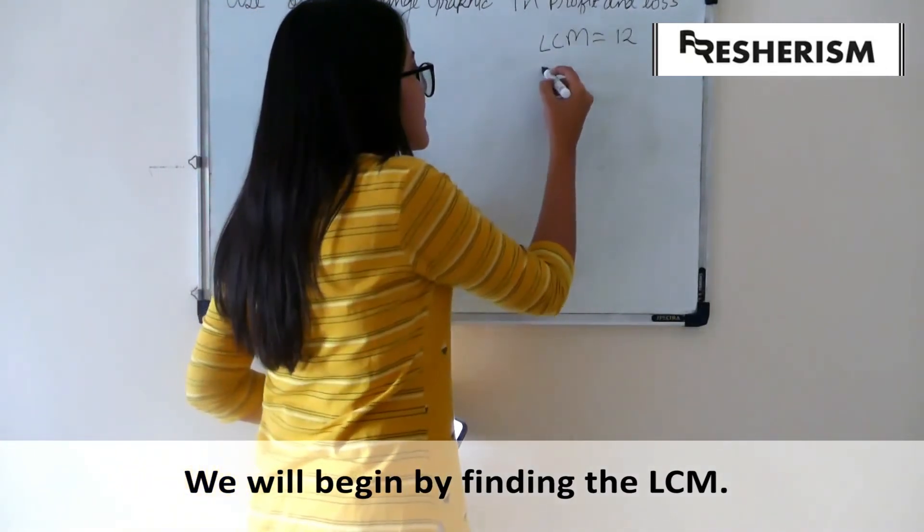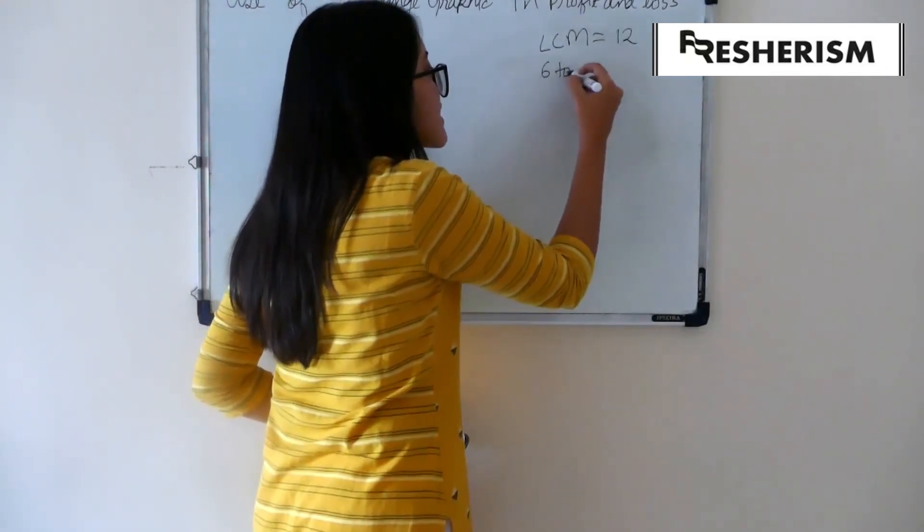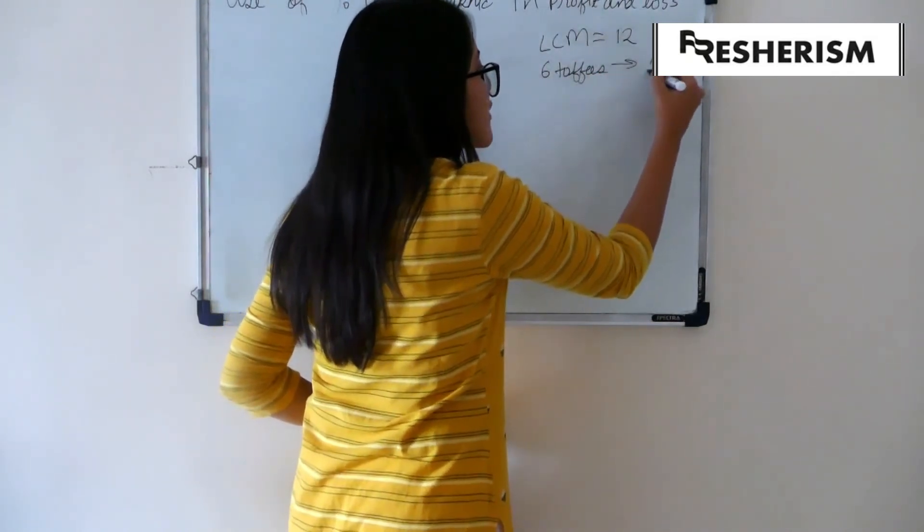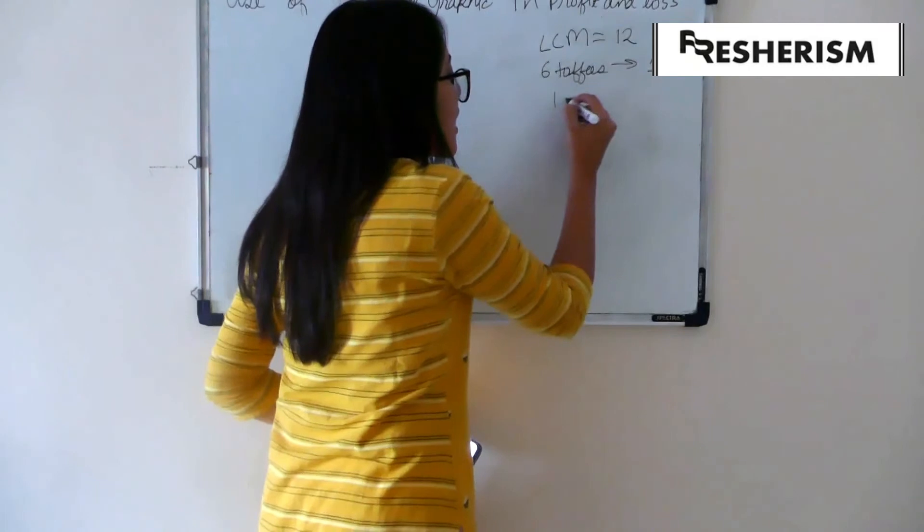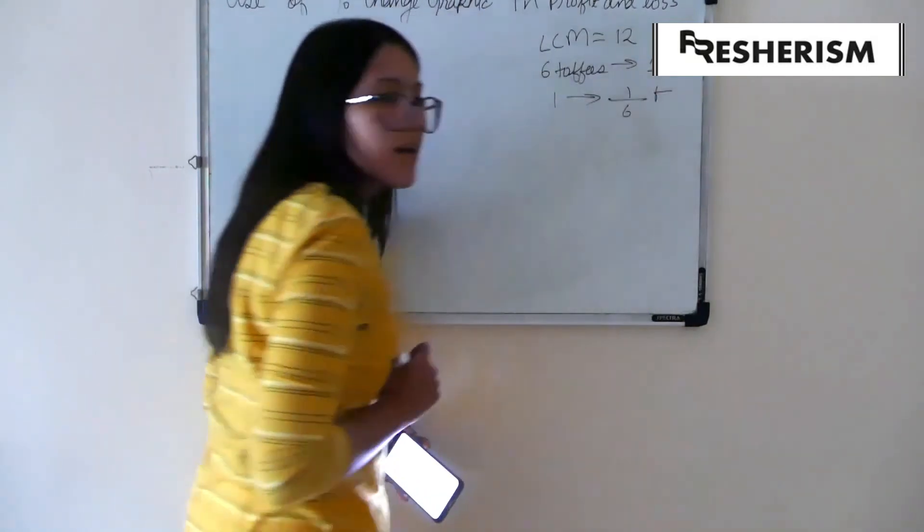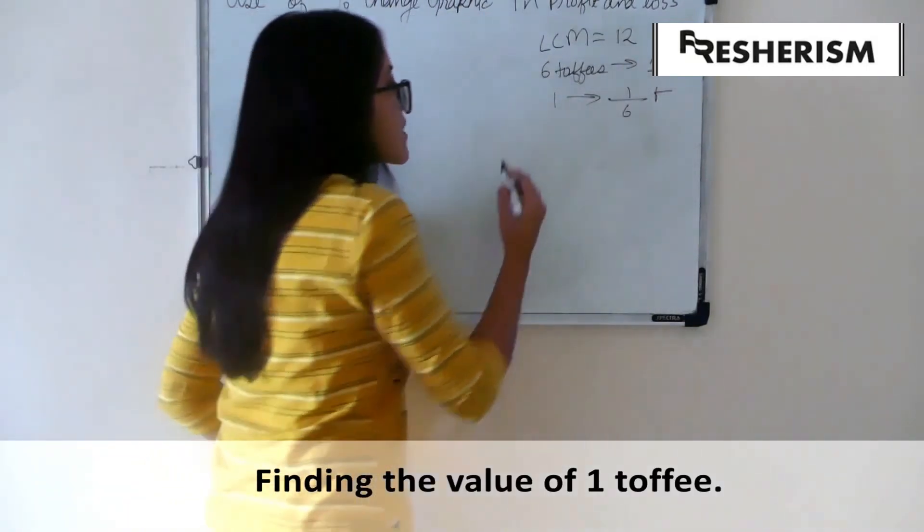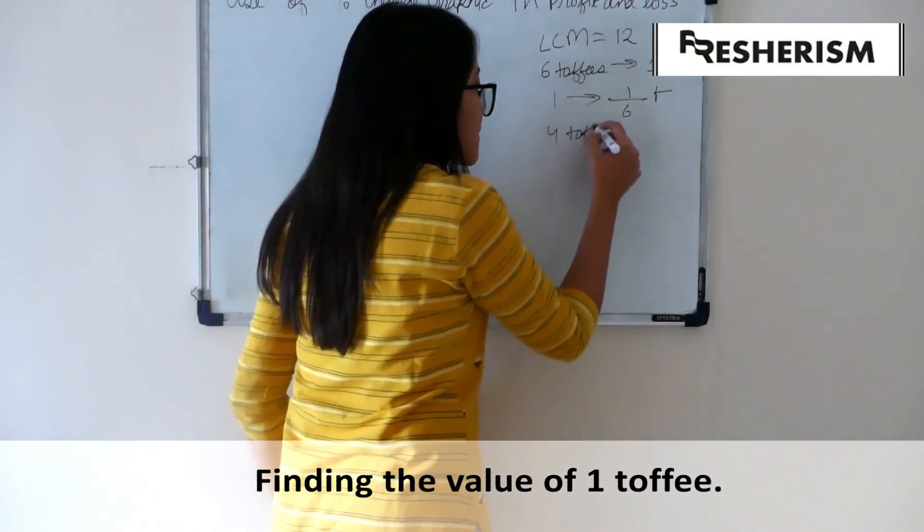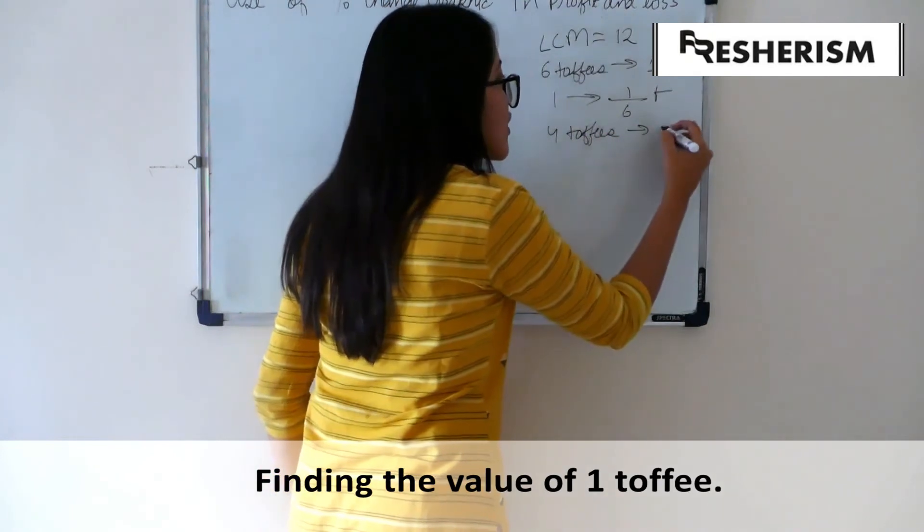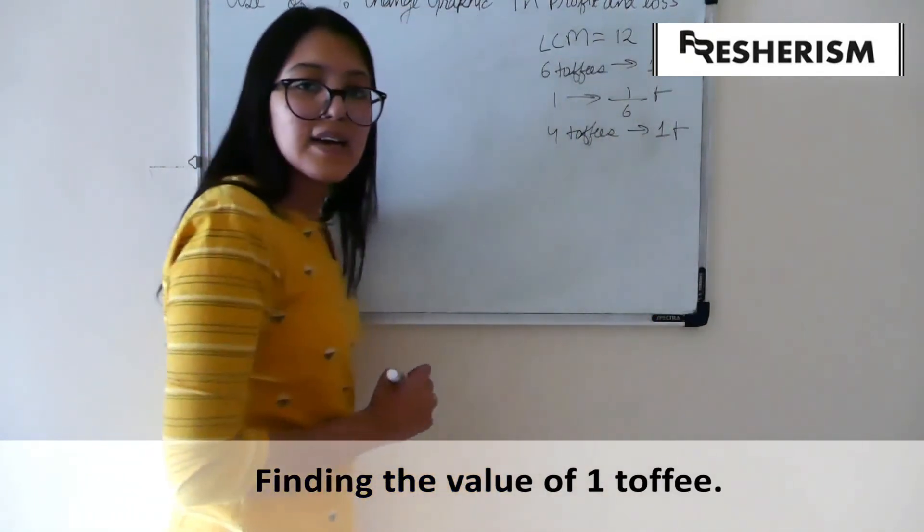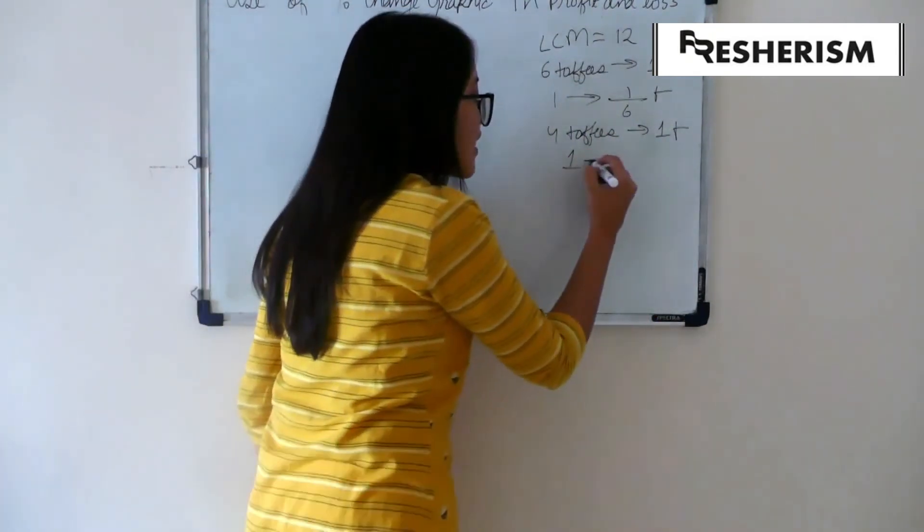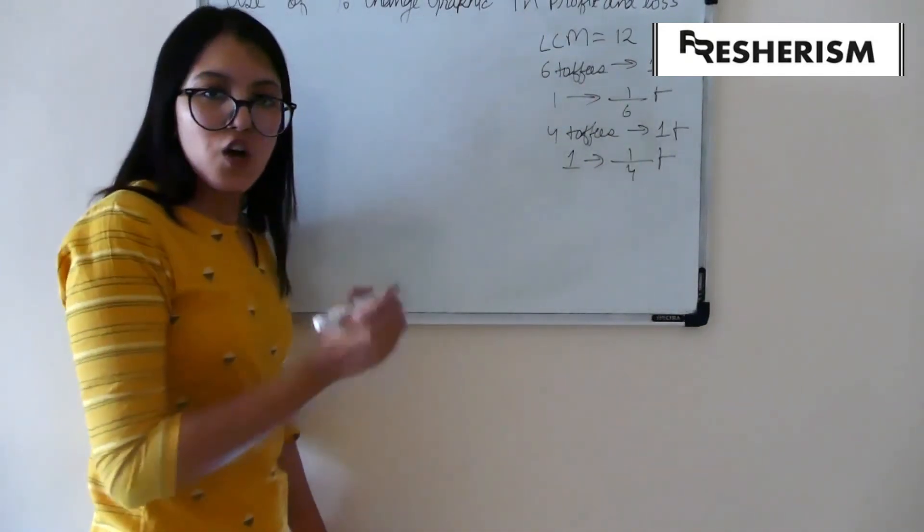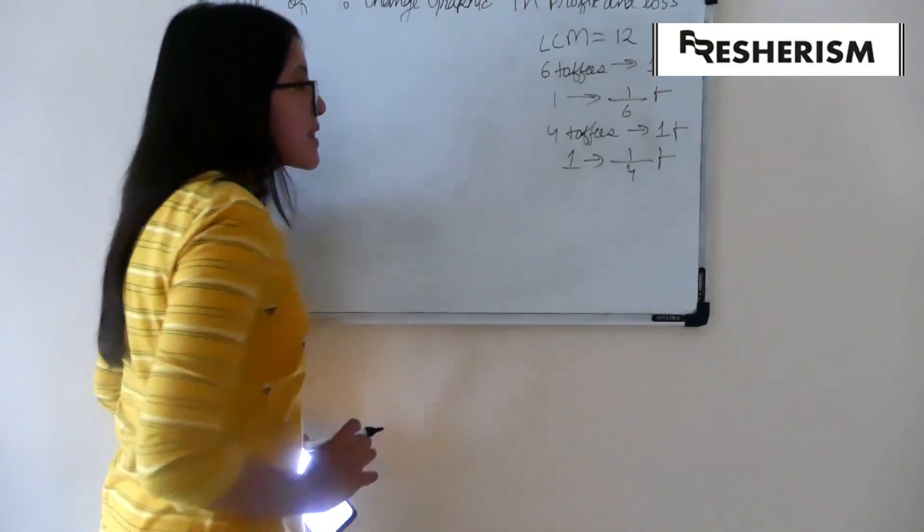Now, if he buys 6 toffees for 1 rupee, 1 toffee will have the value of 1 by 6 rupee. Now, similarly, if he is selling 4 toffees for 1 rupee, he is selling 1 toffee in 1 by 4 rupee. Keep in mind this now.